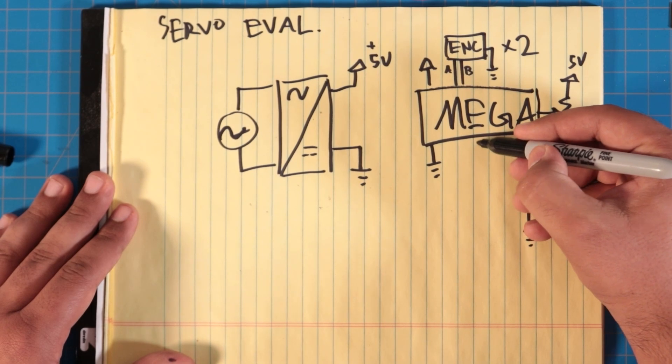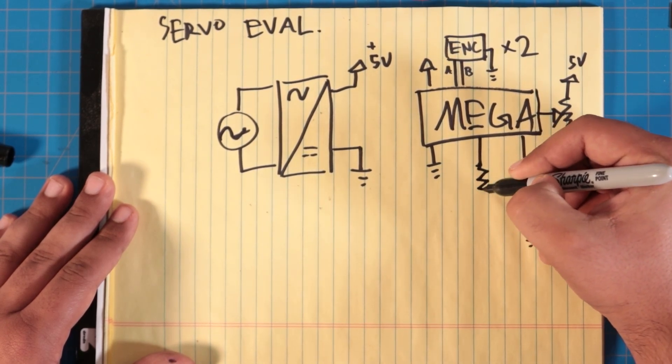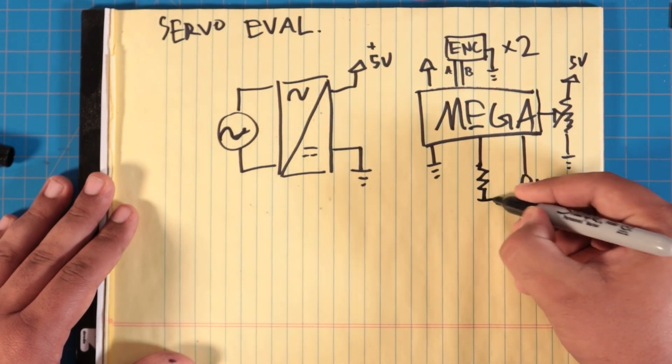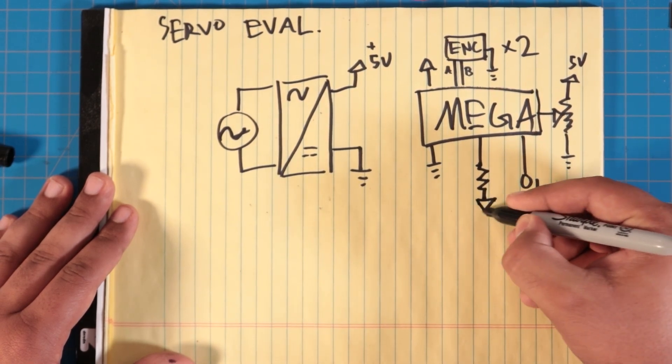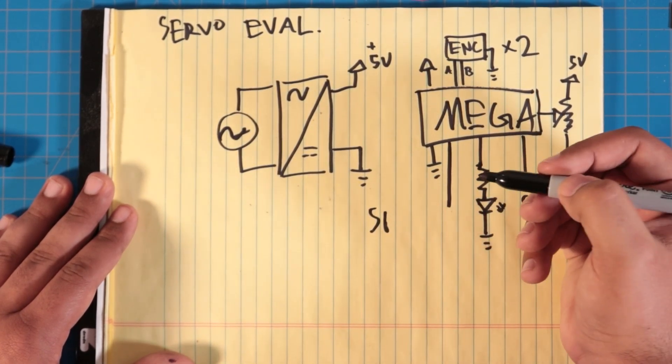And last but not least, each channel will have its own—I'll try a little bit better on the resistor this time. Flawless. And each channel will have its own LED. So we know which one we're selecting. Oh, and don't forget, don't forget the most important thing. LCD.